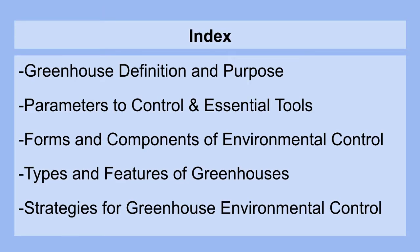We'll start with the definition of greenhouses and their intended purpose. Then we'll move on to the environmental parameters to control and the essential tools that help us do so. Next we'll be looking at the forms and components of environmental control, after that the various types of greenhouses and their unique features, and then we'll be ending with some strategies for greenhouse environmental control under different scenarios.